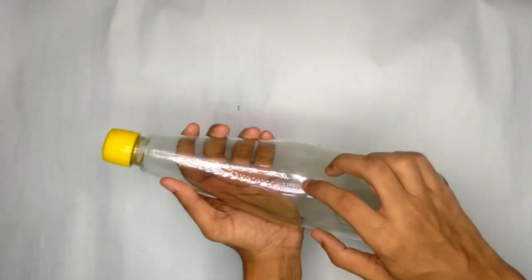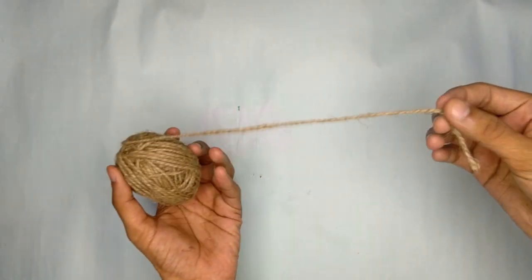Welcome back to my YouTube channel. Today we are going to make this DIY knotted bottle. For making this DIY we will require a glass bottle, thread, and a pair of scissors.